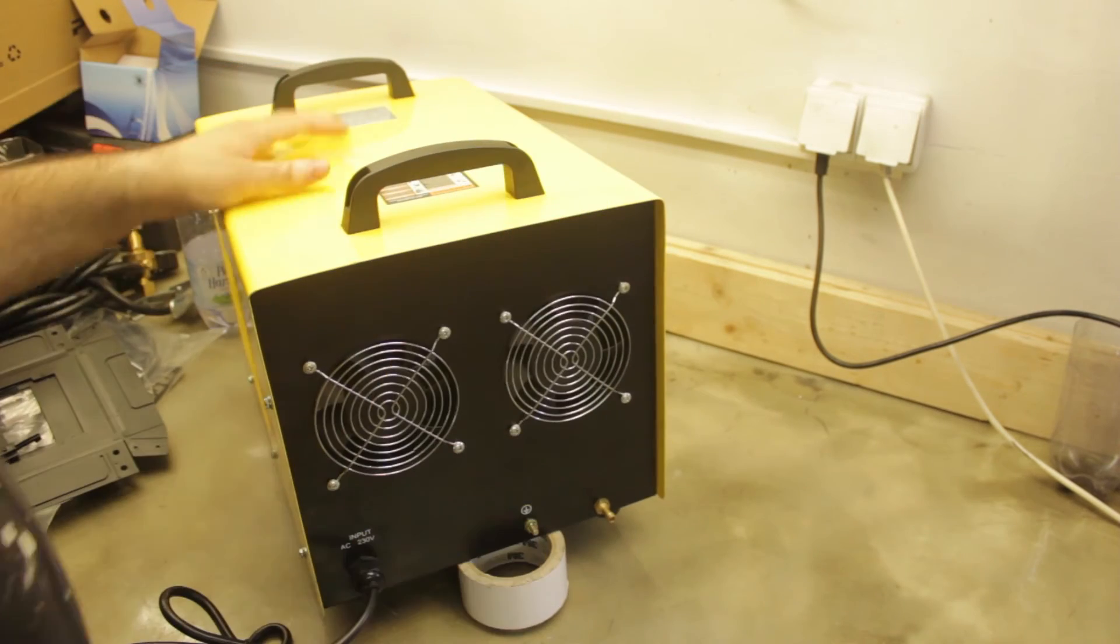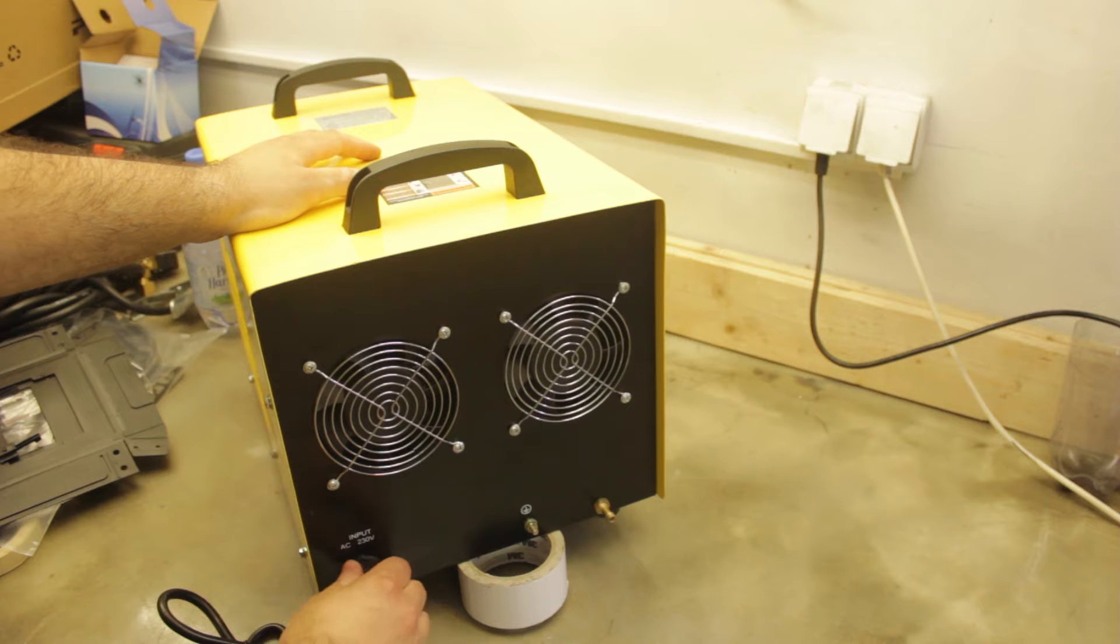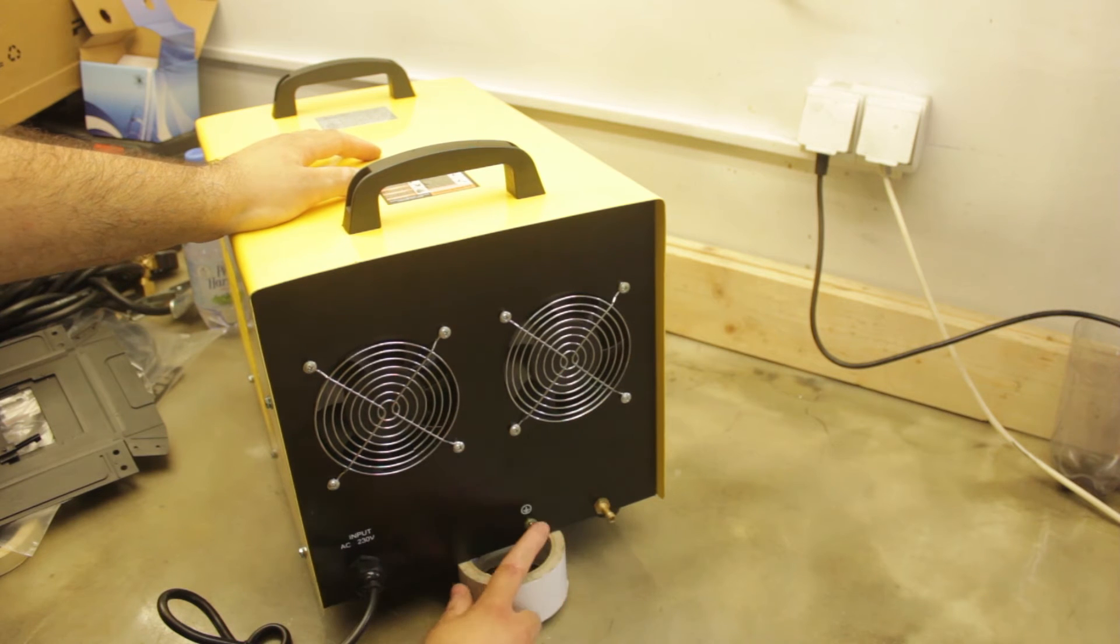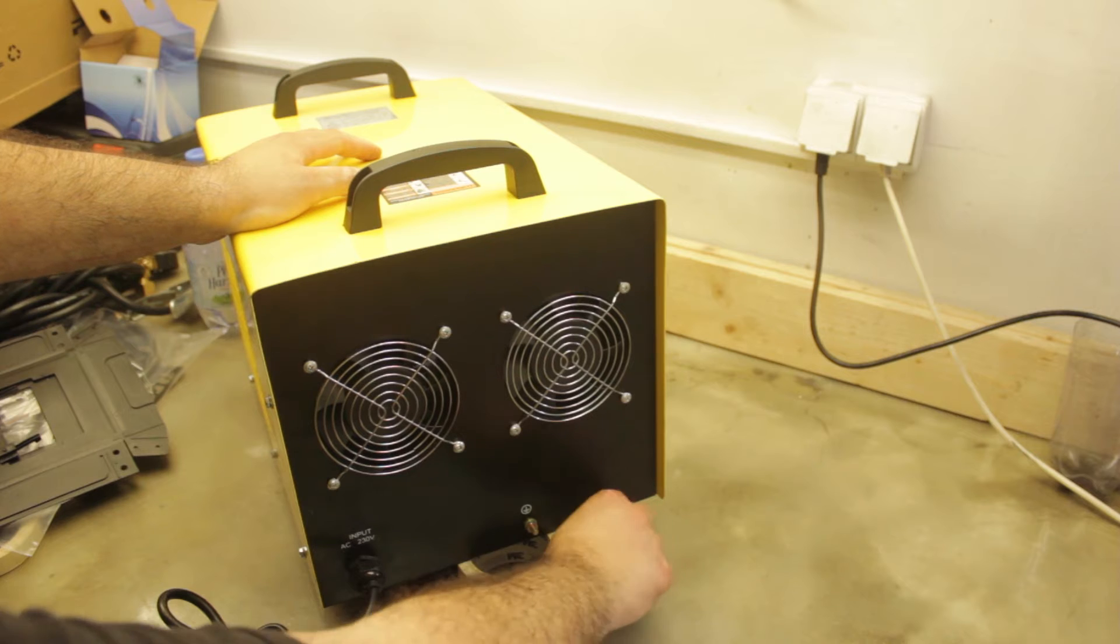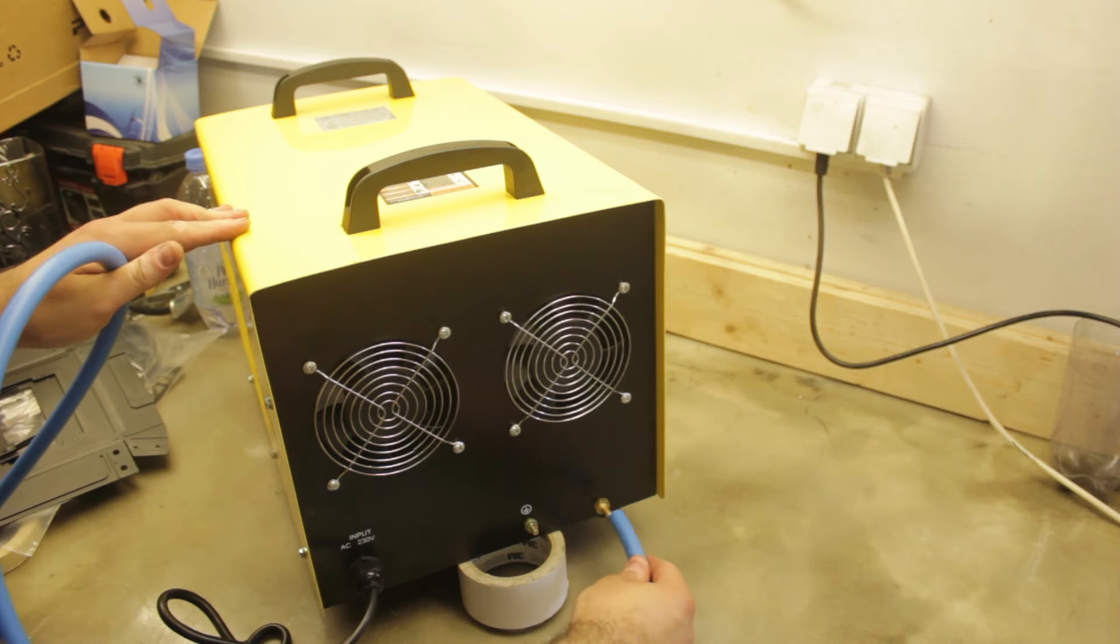Looking at the back of the unit, it's got our AC input, two giant fans, it's got the grounding post, and the gas inlet. You just put in the gas.